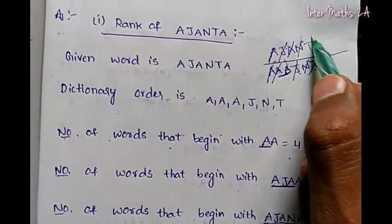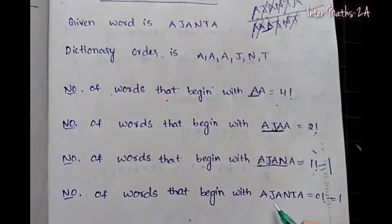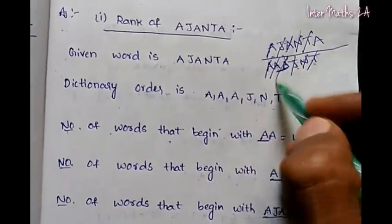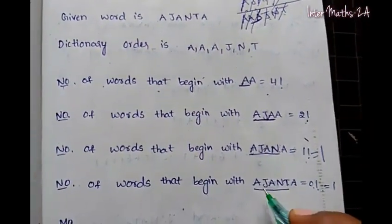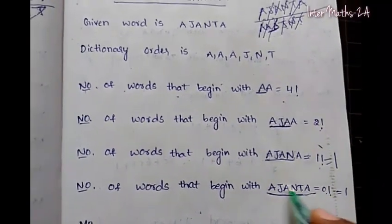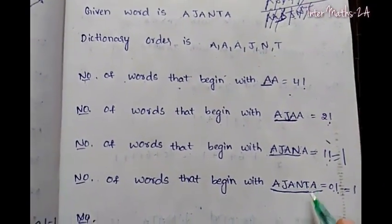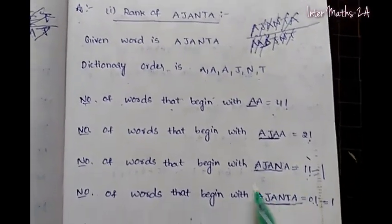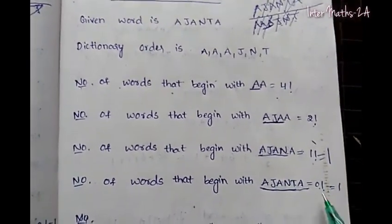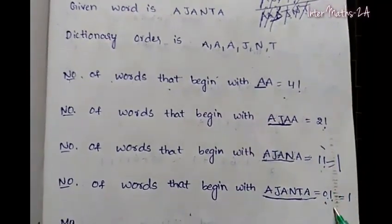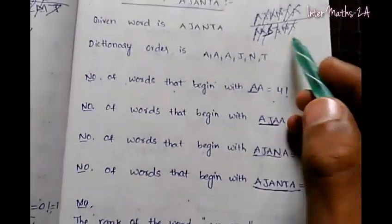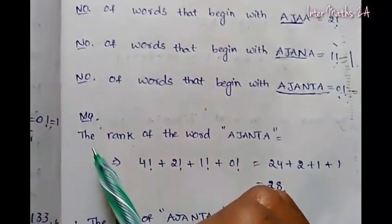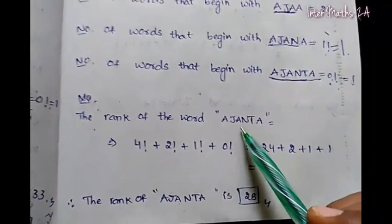The next letter is T, so T cancels and T is fixed. The next letter is A, and the last letter is A. So we have the letters J, A and T remaining. The last letter gives 0 factorial, and 0 factorial value is 1, and 1 factorial value is also 1. So 1 is added to the rank.